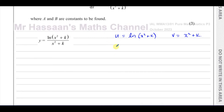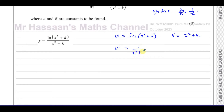We have to find u', the differential of u. Remember, if y = ln(x), dy/dx = 1/x. But if it's ln of some function of x, we multiply by the differential of what's inside using the chain rule. So u' is 1 over (x² + k) multiplied by 2x, giving u' = 2x/(x² + k). And v' is simply 2x.